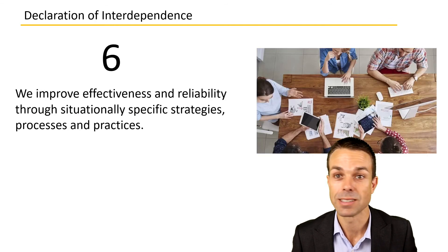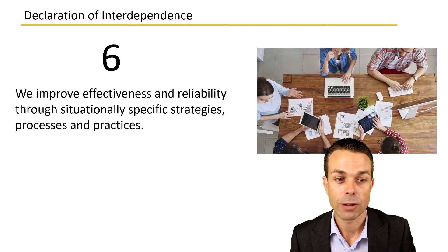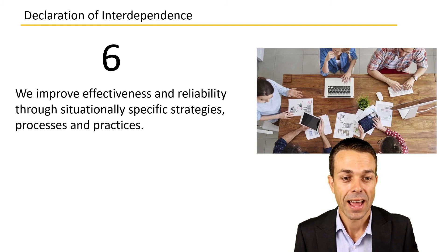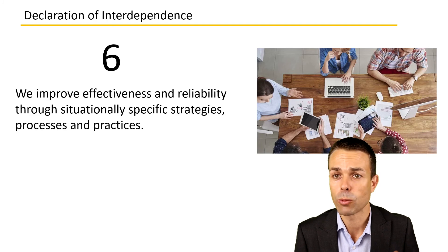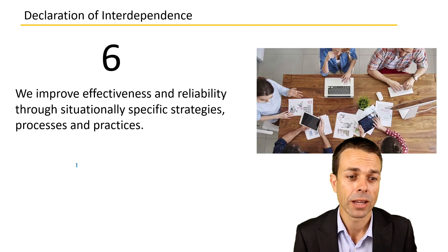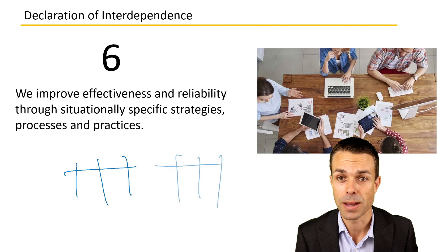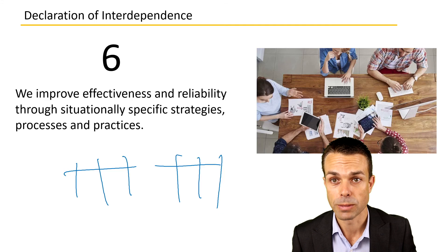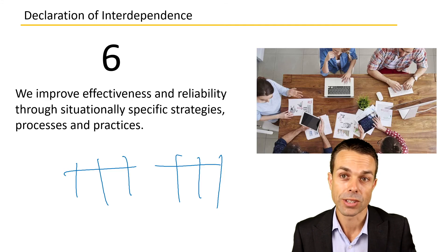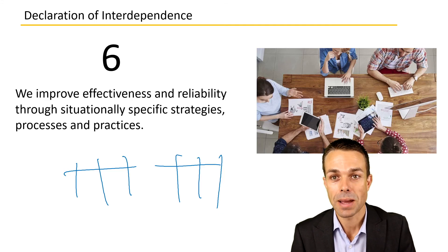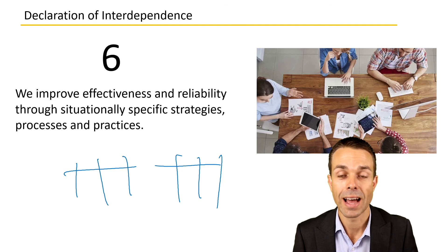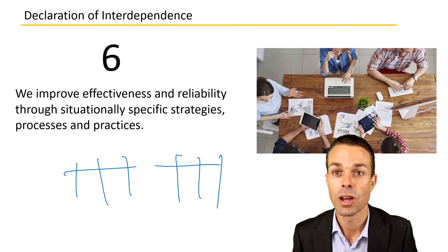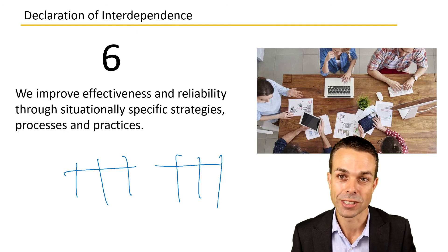The last principle, number six: we improve effectiveness and reliability through situationally specific strategies, processes, and practices. This means we're adjusting and tailoring to the situation. Not every situation is going to need Kanban, Scrum, extreme programming, feature-driven development, Crystal, or all of those things. You take the pieces that make sense for your current environment, as long as you're delivering value to the customer regularly, getting feedback, and iterating towards success.